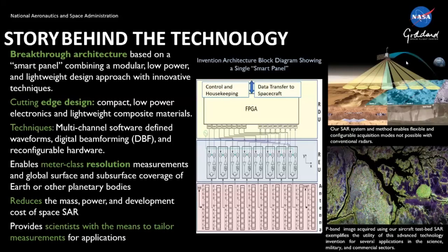The story behind this technology is based on the smart panel, which combines a modular, low power, and lightweight design approach with innovative techniques. The design is compact, requires less power and is lightweight, made of composite materials. It has multi-channel software-defined waveforms, digital beamforming, and reconfigurable hardware — all on the same panel. The antenna and the electronics for beamforming are on the panel and are reconfigurable on the fly. It enables meter-class resolution measurements of global surfaces, as well as subsurface using the longer wavelength bands. Overall, the mass, power, and development cost of space SARs are reduced using this concept.